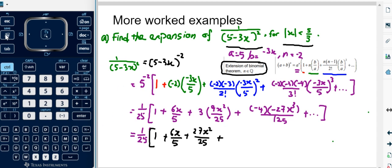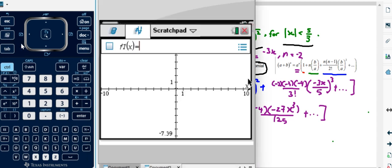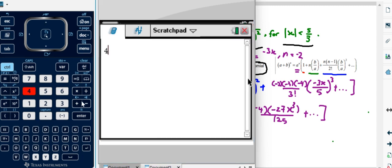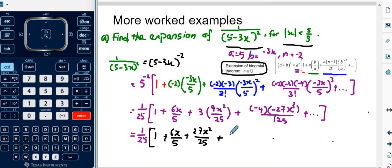So it's 4 times 27 over 125, which is 108 over 125. So I can write 108 over 125 x to the power of 3 plus dot dot dot to infinity.